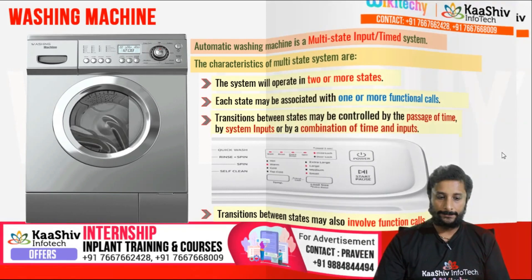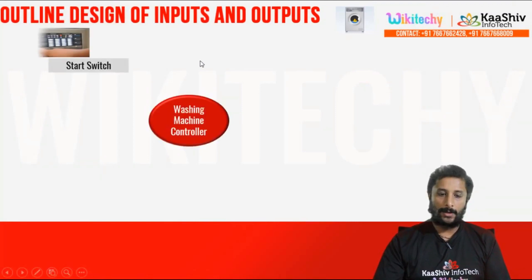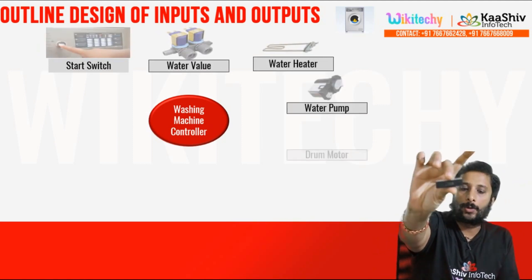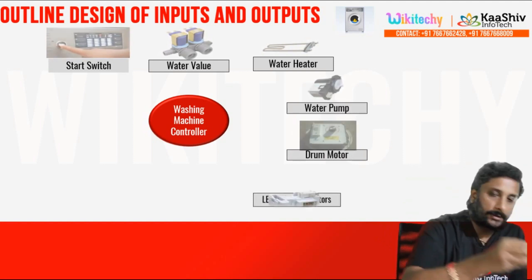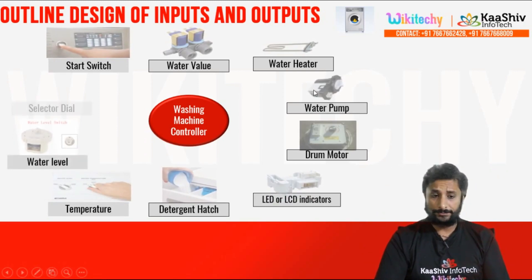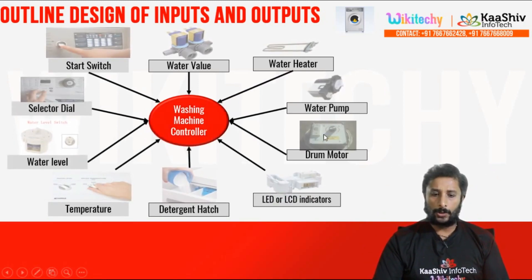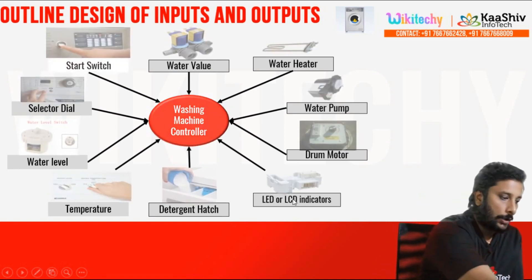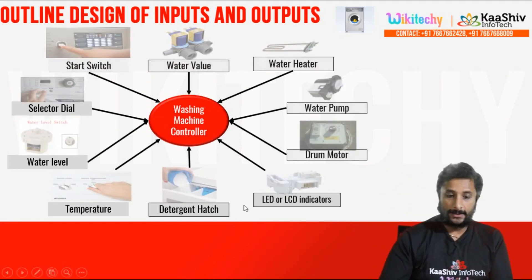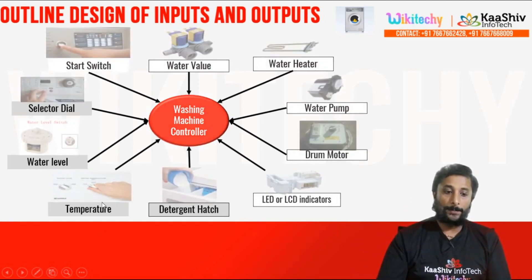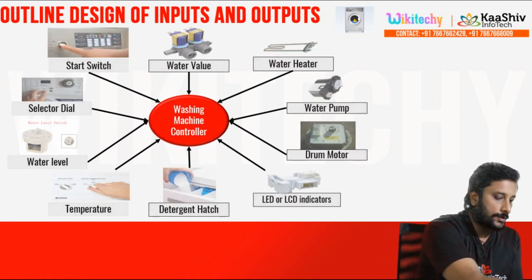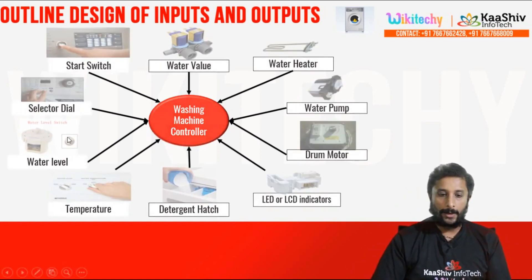This is the washing machine. Washing machine is one washing machine controller. This is a PIC microcontroller, so the washing machine will run. This is the motor control circuit. The switcher will start with water valve and heat. Water pump is pumping. The drum motor is LED and LCD display. Detach and hatch, detach and power. Water level indicator. Select a dial. This is the washing machine controller.